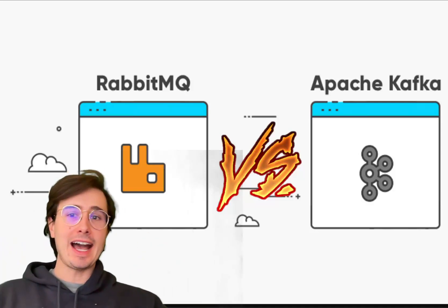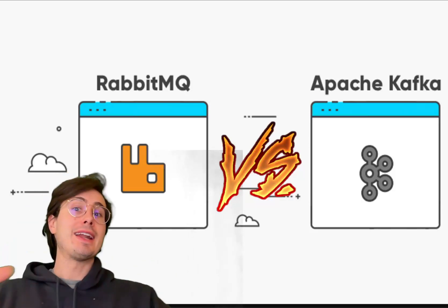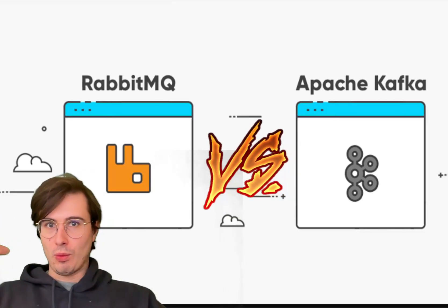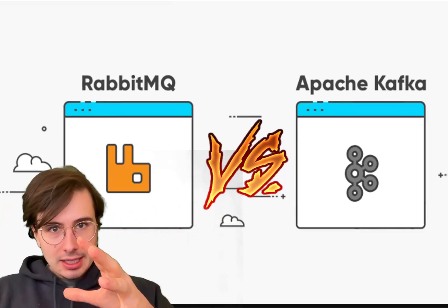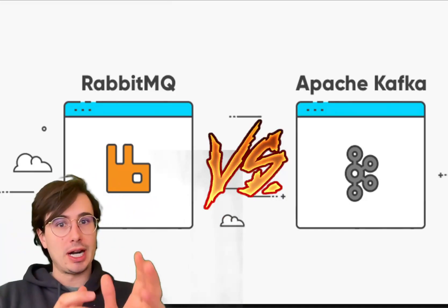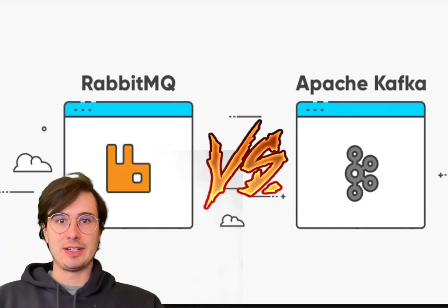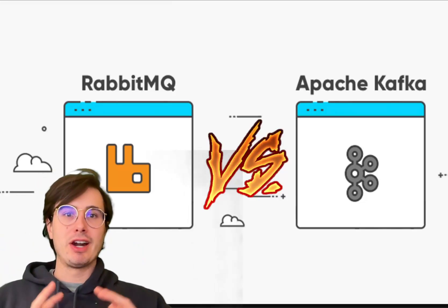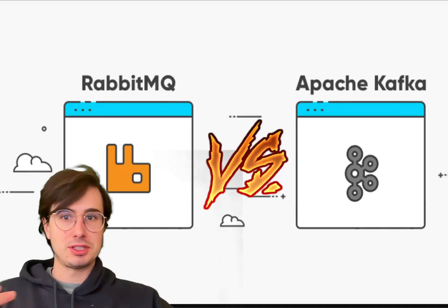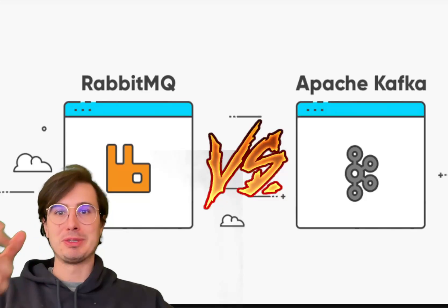Hey, data guy here. Today I have yet another viewer request video, this time comparing Kafka to RabbitMQ — another message broker, queue manager, and streaming engine. I'm going to compare Apache Kafka against RabbitMQ, as they're both leading tools in messaging and data streaming. Both are essential middleware for facilitating communication and coordination between applications, but they have fundamental design differences that make them better suited for distinct use cases.